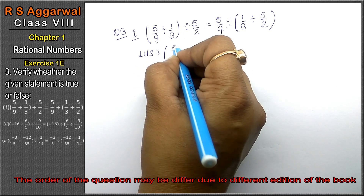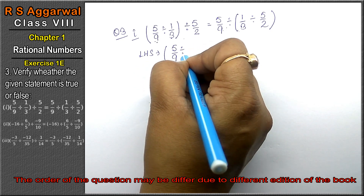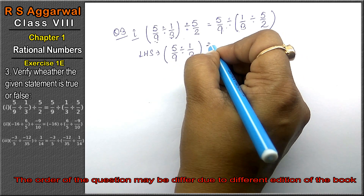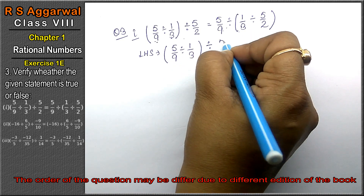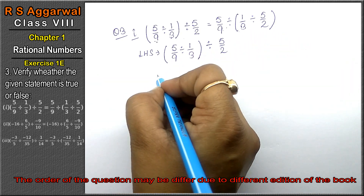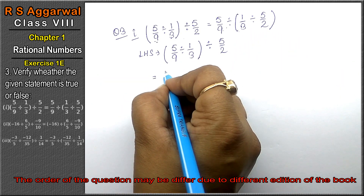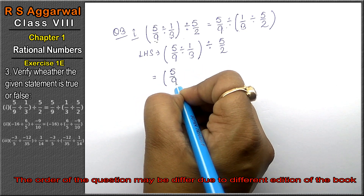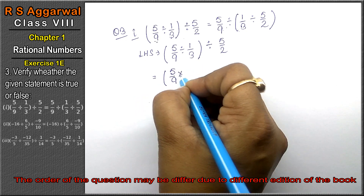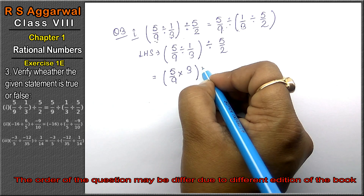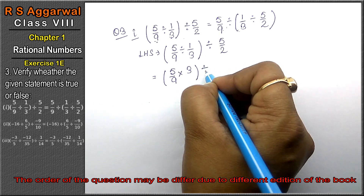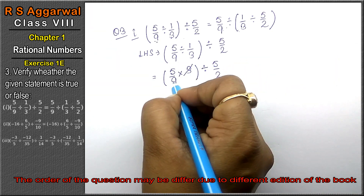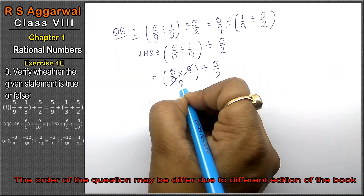Left-hand side: 5/9 ÷ (1/3 ÷ 5/2). First, let's solve the bracket. 5/9 multiplied by 3, divided by 5/2. Since 3 ones are 3 and 3 threes are 9, this simplifies.